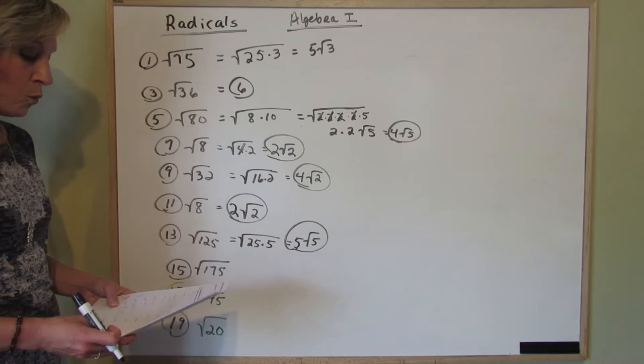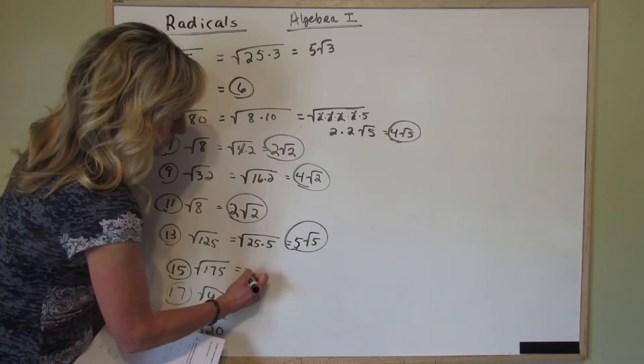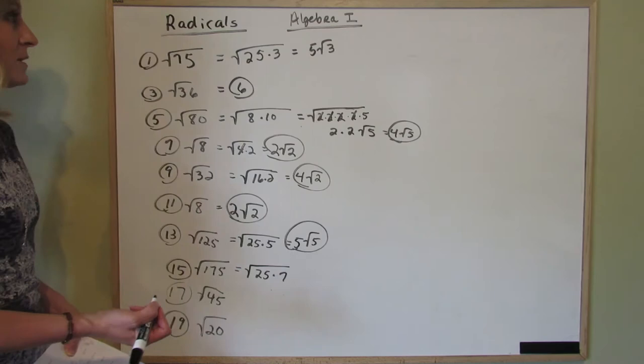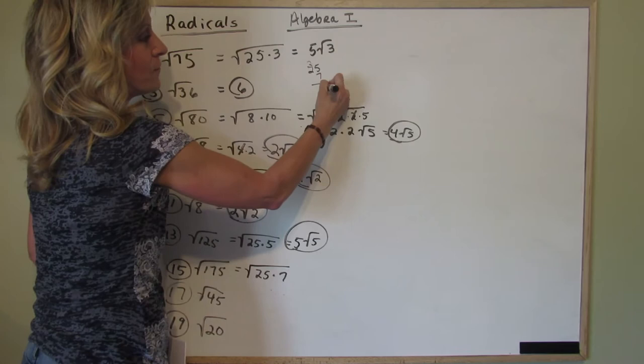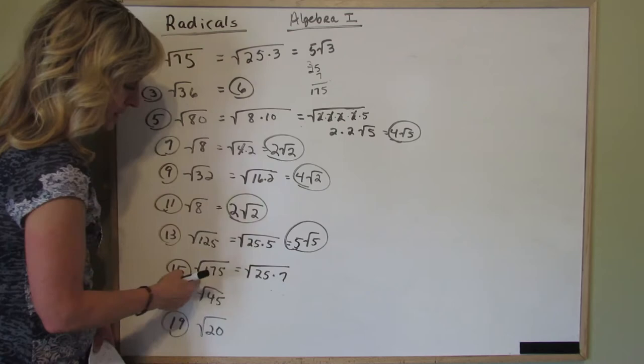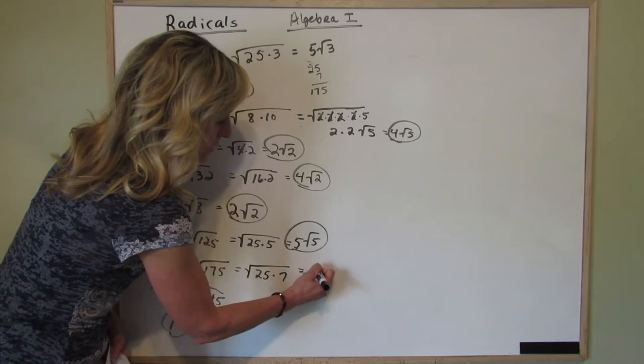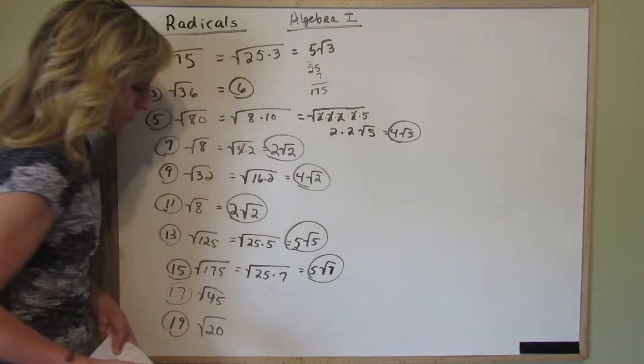Number 15, the square root of 175. Well that happens to be the square root of 25 times 7, and I'll just prove that to you right here. So 25 times 7 is 175. So we take the square root of 25, we get 5, and we're left with a 7 underneath. So that is 5 square roots of 7.